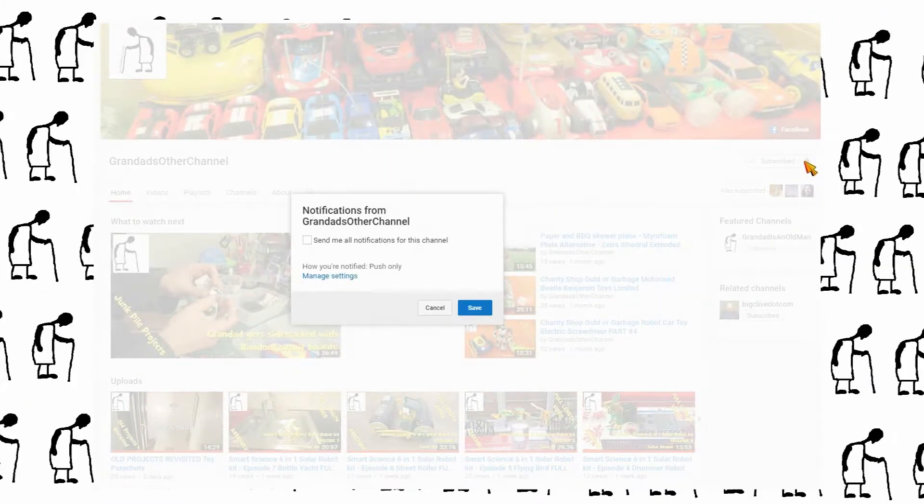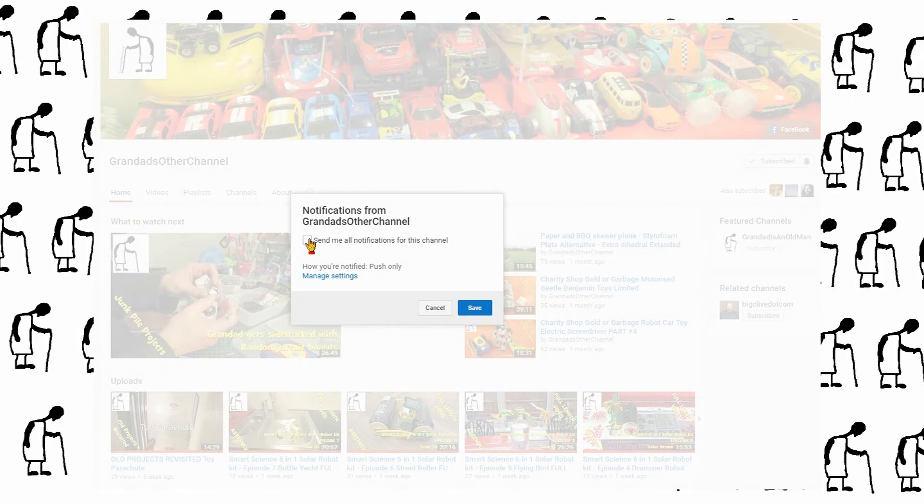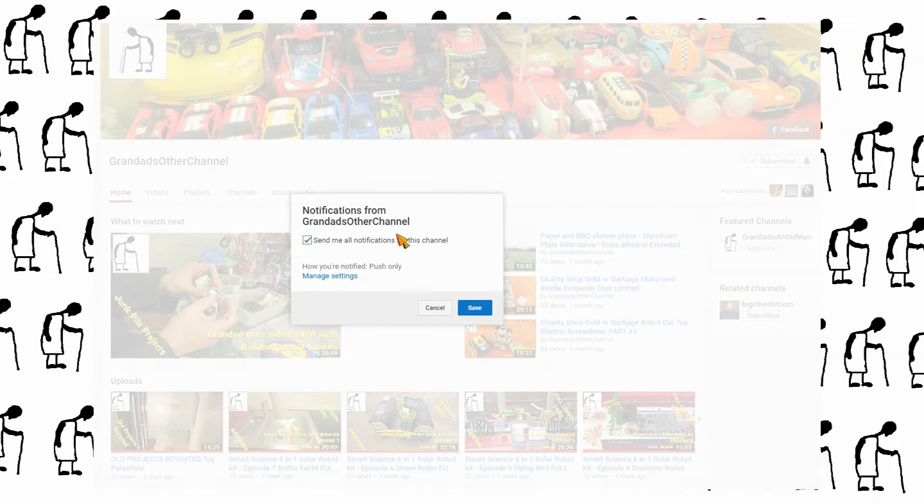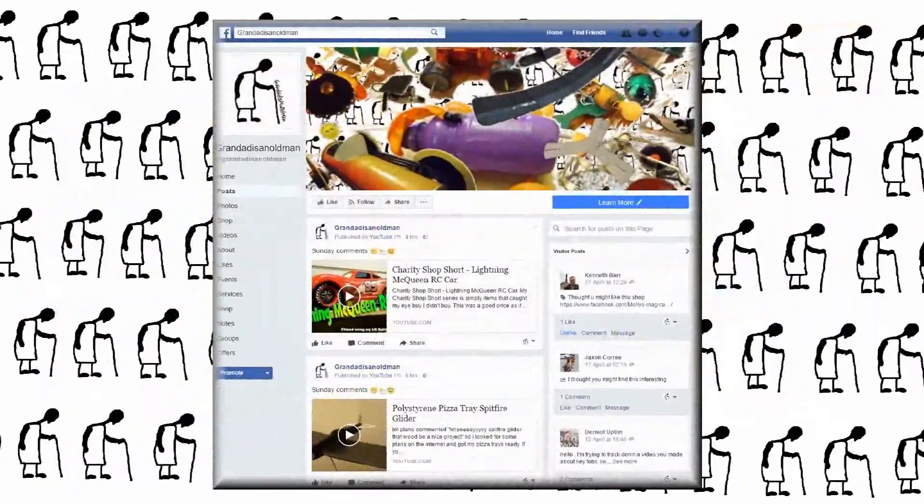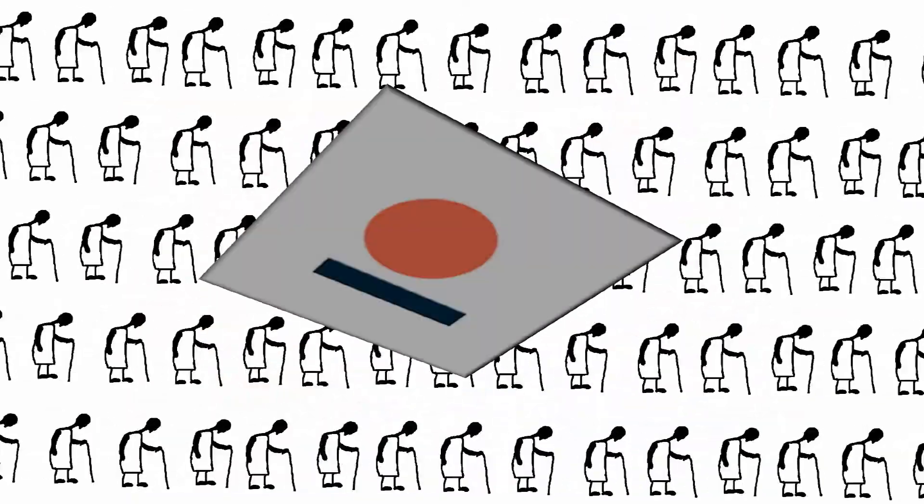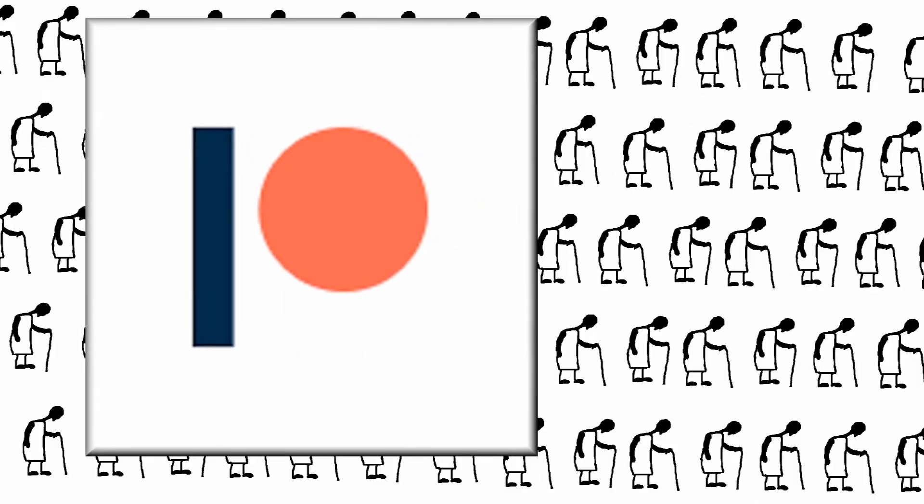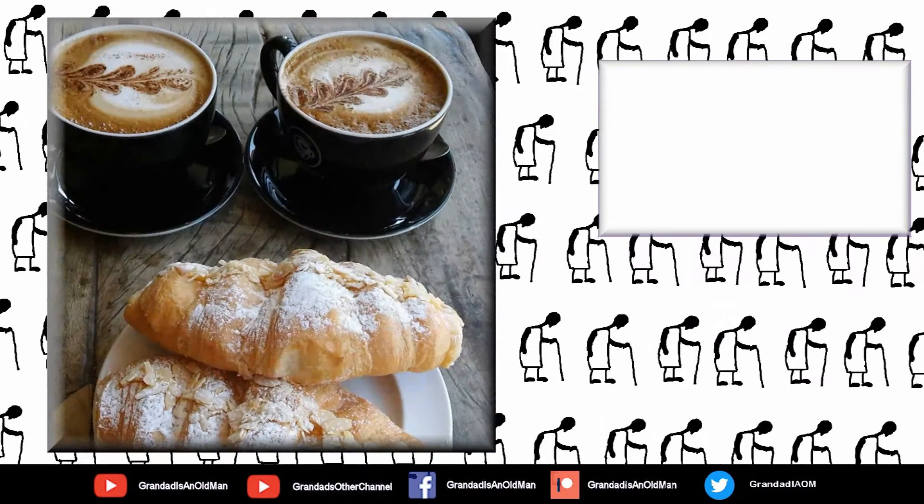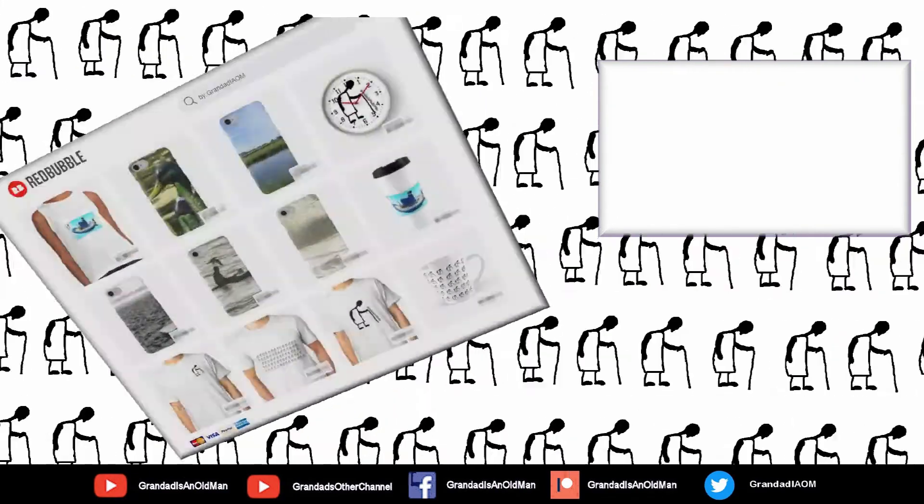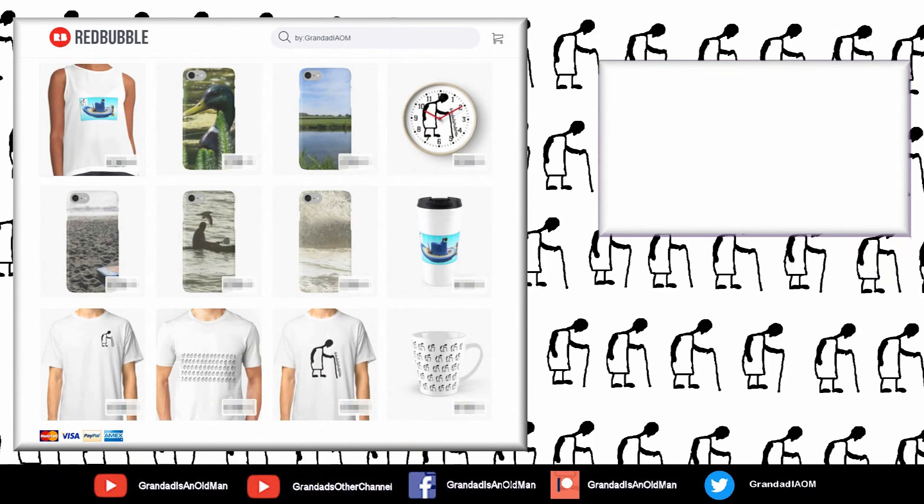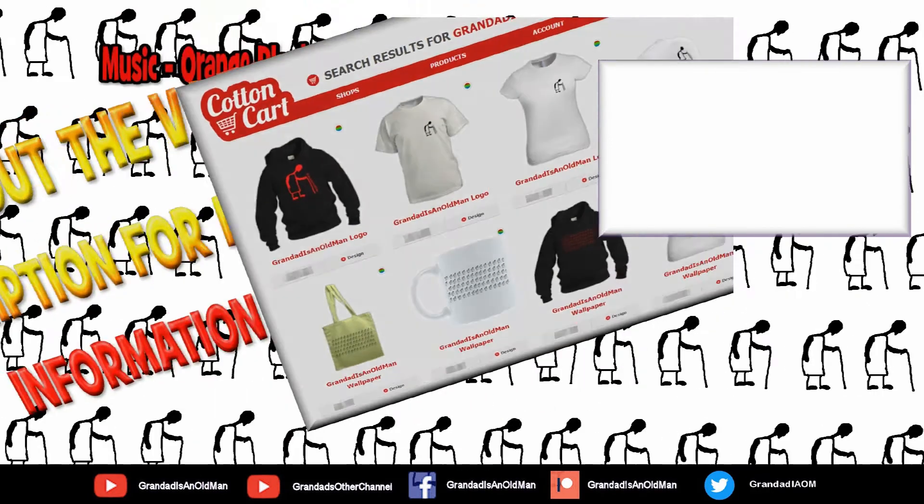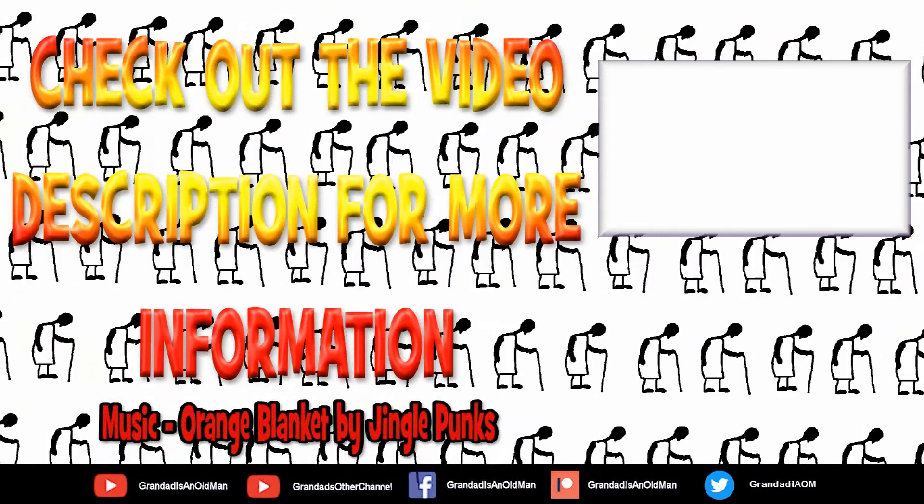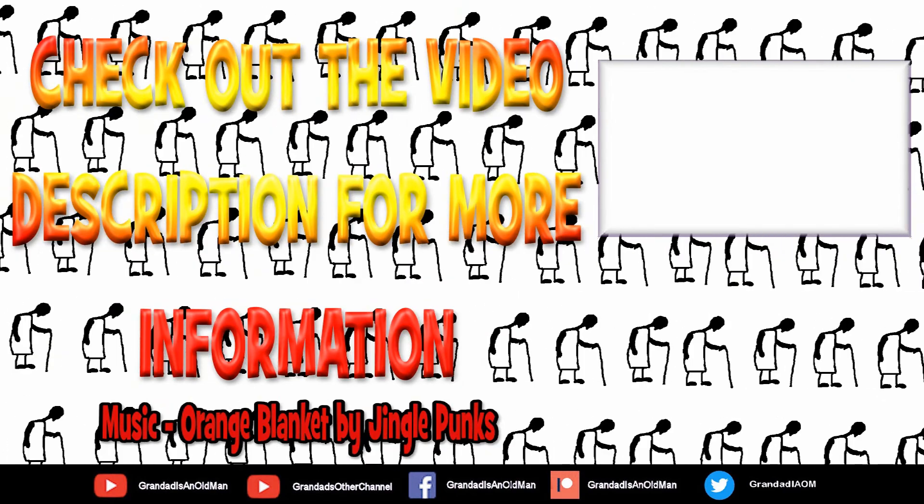Click subscribe and enable the notifications to keep you up to date with my new releases. My second channel, Grandad's Other Channel, is where I put the longer videos with more detail. Then there's my Facebook page and you can follow me on Twitter. You can help keep my channel running by donating a dollar on Patreon to buy me coffee. And if you fancy some Grandad merchandise, I have two shops, one on Redbubble and the other on Cotton Car. Finally, you can always find more information in the video description. Thanks again for watching.